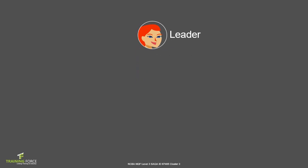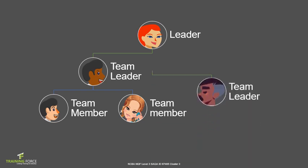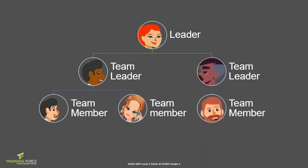Typical team structures look like a functional organizational structure. In Cluster 1, we learned how to communicate between levels of authority in this type of structure. It shows the authority levels, the function of each member in the team, and what role each team member needs to play.